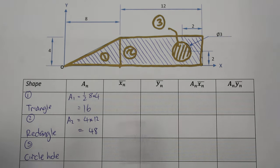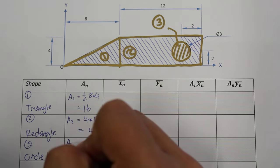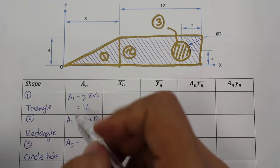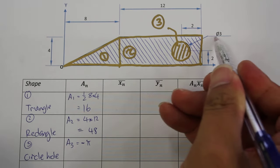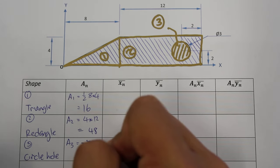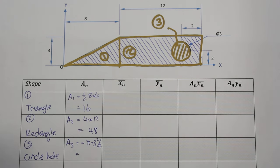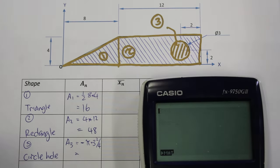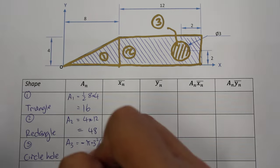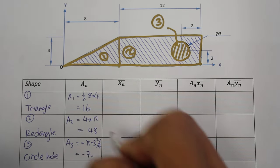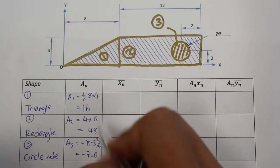For the third shape, the circular hole, A3 is a negative area. We use the formula for a circle: negative pi times diameter squared divided by four. With a diameter of three, that gives us negative pi times three squared divided by four, which equals approximately negative 7.069.